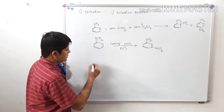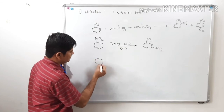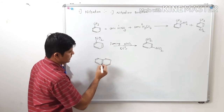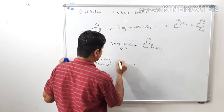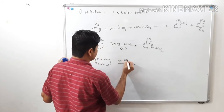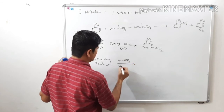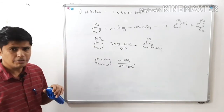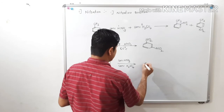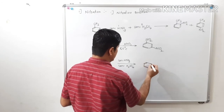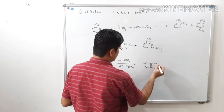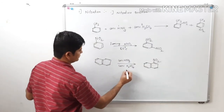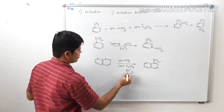Another example: if we carry out nitration of naphthalene using concentrated nitric acid and concentrated sulfuric acid at 80°C, there is formation of 1-nitronaphthalene, not 2-nitronaphthalene.